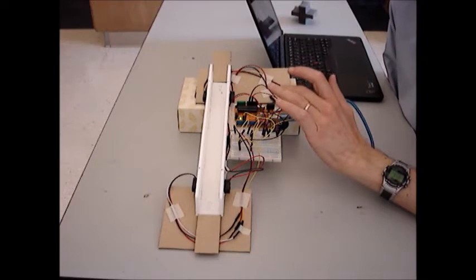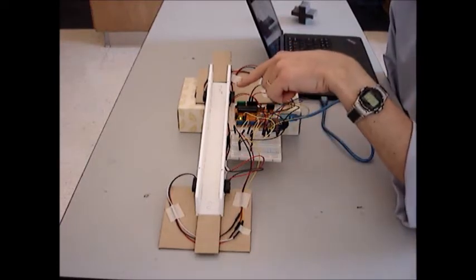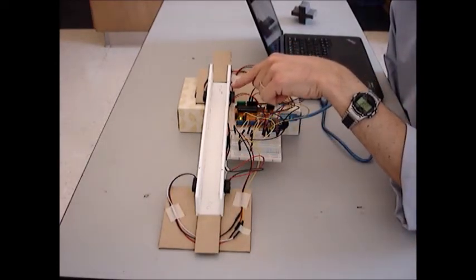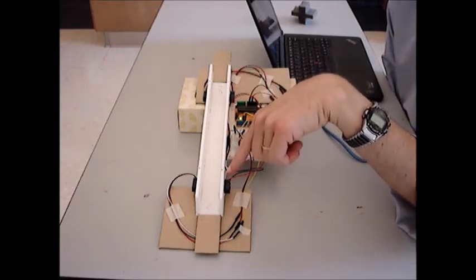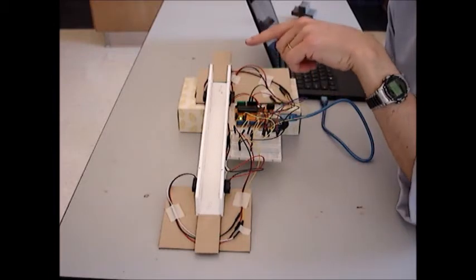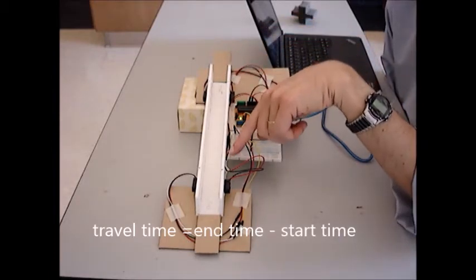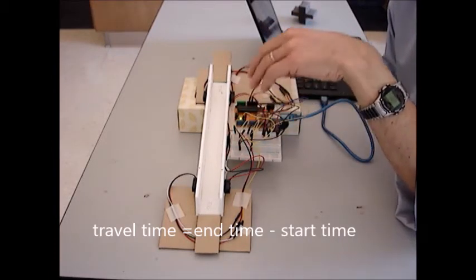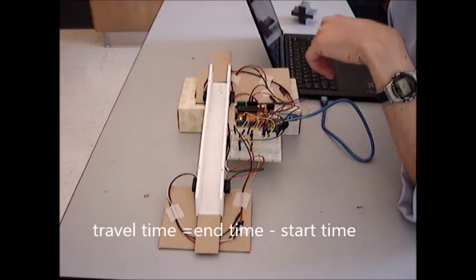We can program the Arduino so that it measures the interval of time between the moment the first brake beam sensor is interrupted and the second one is interrupted. And then knowing the distance, we can tell the Arduino to compute velocity which is distance over time.